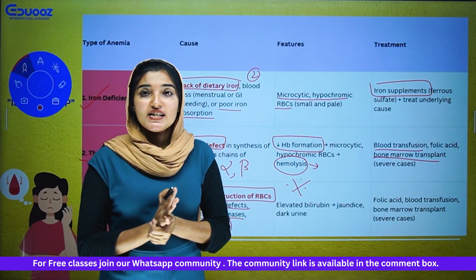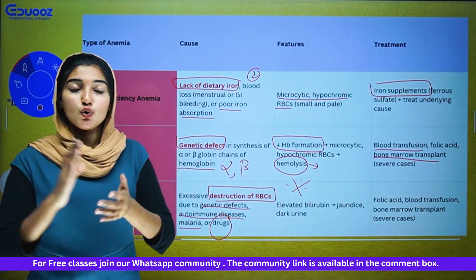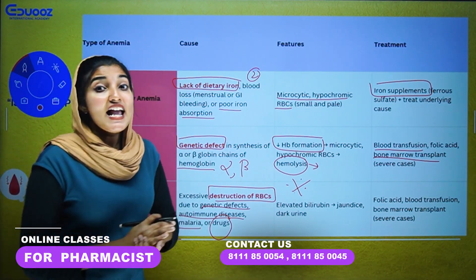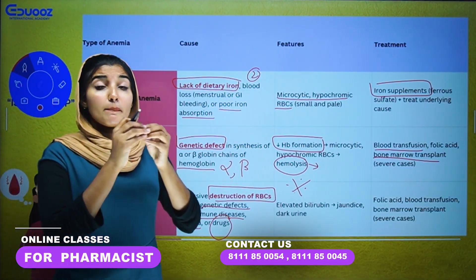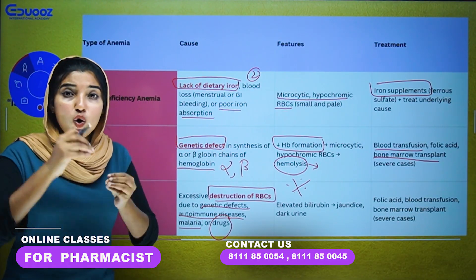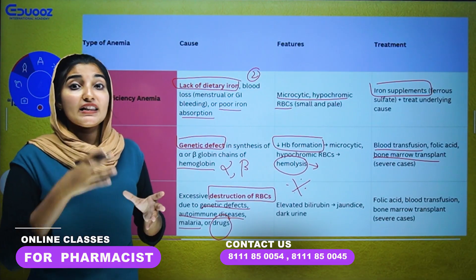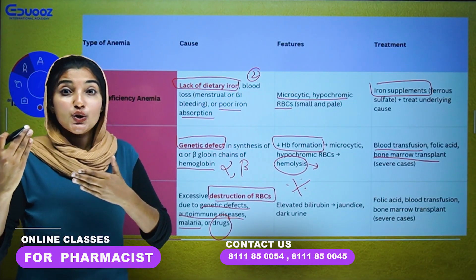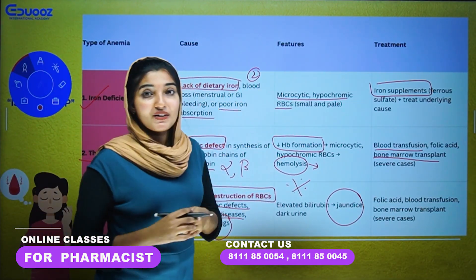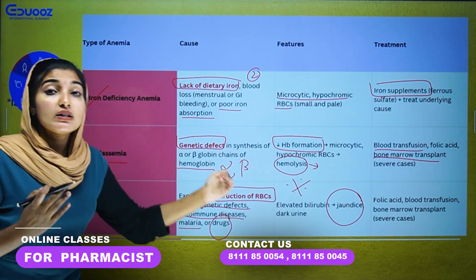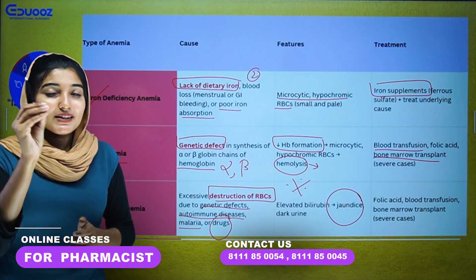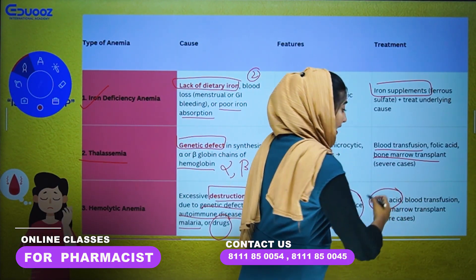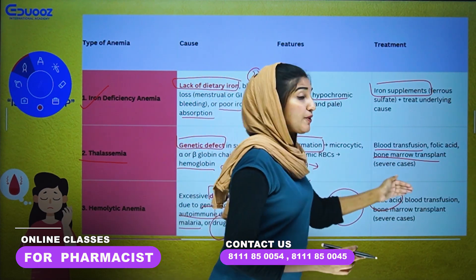An important feature of hemolytic anemia is elevated jaundice and elevated bilirubin. When we break the RBC, hemoglobin is released and converted to bilirubin, causing jaundice. Treatment includes blood transfusion and bone marrow transplant.